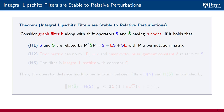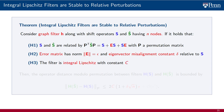The perturbed shift may be relabeled. Second, the symmetric error matrix E has a norm equal to epsilon and an eigenvector misalignment constant equal to delta, the latter taken relative to shift S. Third, the filter H is integral Lipschitz with constant C.